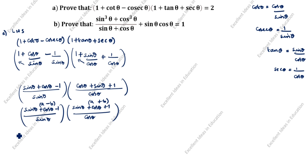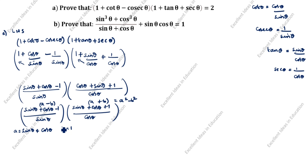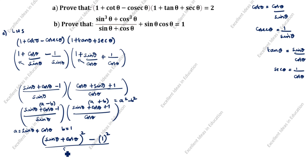This is (a − b) and this is (a + b). What is a here? a is equal to sin θ + cos θ. b is equal to 1. What is this formula? a² − b². Now we will write as per this formula. So a is sin θ + cos θ, so a² is (sin θ + cos θ)², minus b² is 1, divided by sin θ cos θ.